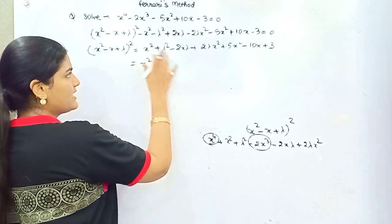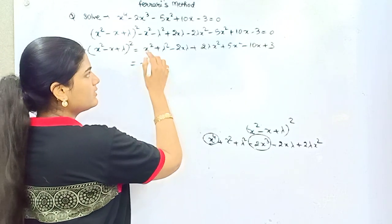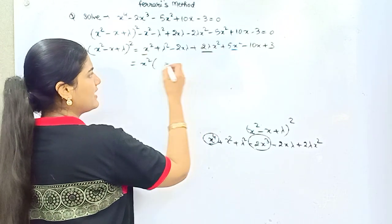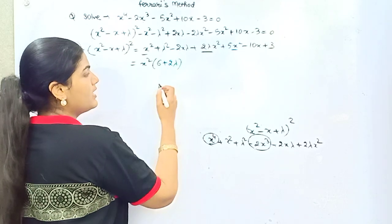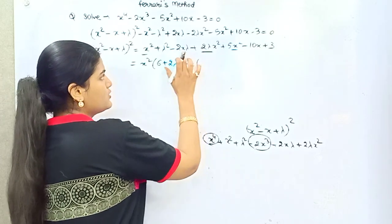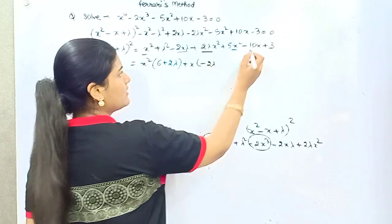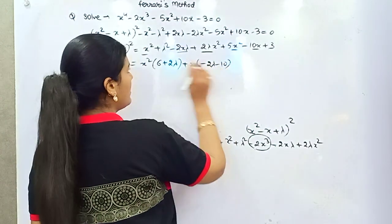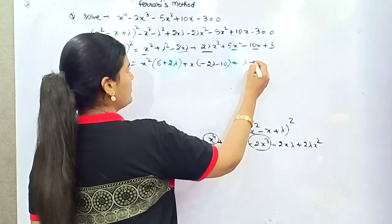Now collect all the like terms together. For the highest power of x, the coefficient is 1 plus 5 plus 2λ, which equals 6 plus 2λ. Then the coefficient of x is minus 2λ minus 10, and the constant term is at the end.